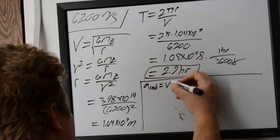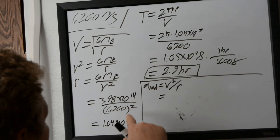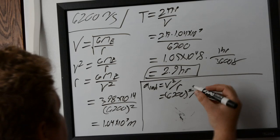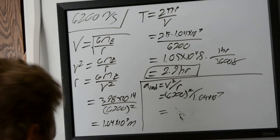that our a_rad is equal to our orbital velocity squared over the radius. And we already know what those two variables are, so we can just plug those right in. We have 6200 squared over our radius, which was 1.04 × 10^7 meters. So we do that math, that will give us 3.7 meters per second squared as our radial acceleration.